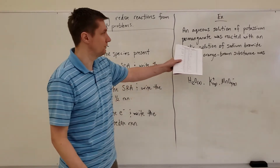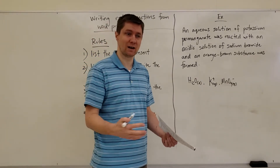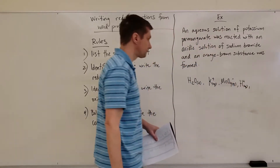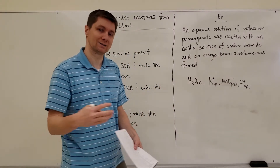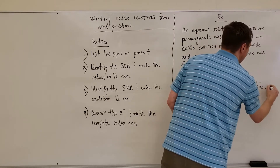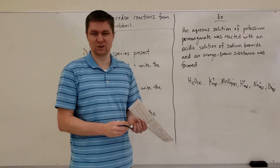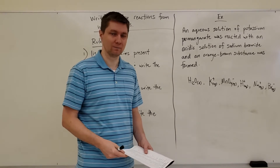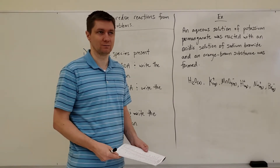Then it says it was reacted with an acidic solution. Acidic means we have H⁺ in the solution. Then an acidic solution of sodium bromide — another ionic compound in solution, so I write it as its ions. And then it says an orange-brown substance was formed. That's just a hint to help you check if you've done the reaction correctly — you don't need it memorized, it's just an added clue.